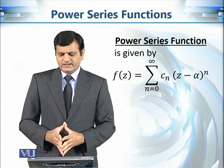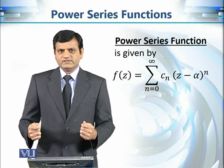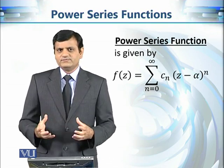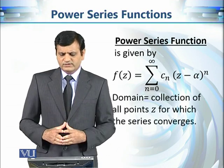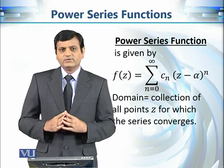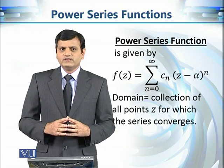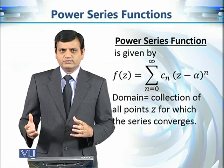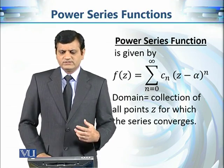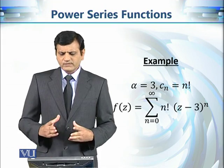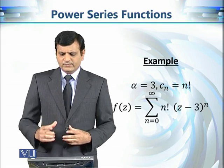We have agreed that the series rule will assign z to f(z), but this is an incomplete definition. To complete it we need the domain, which is the collection of all points z for which the series converges. If the series does not converge, it will not give us a well-defined output, so we only consider those points for which the series converges.